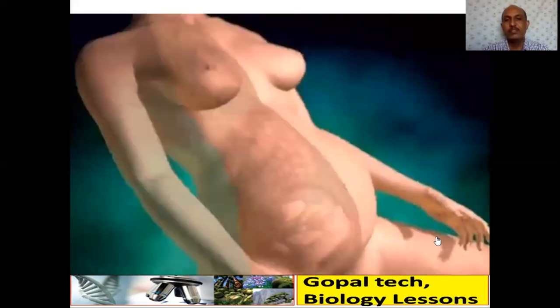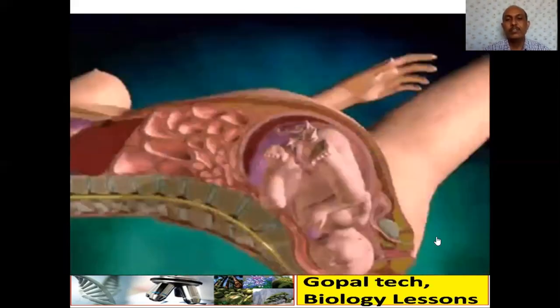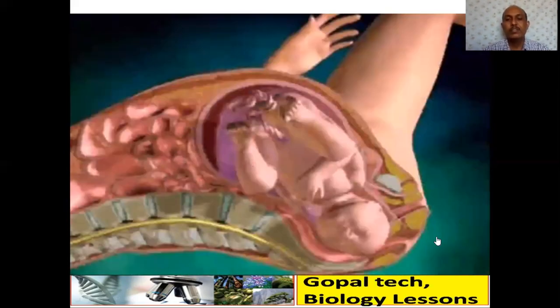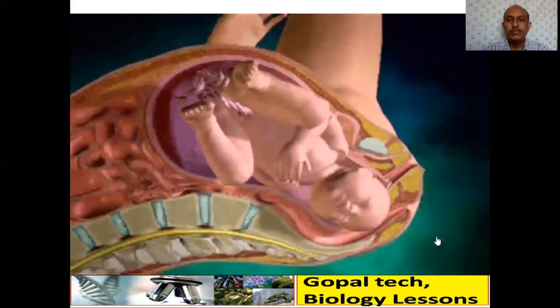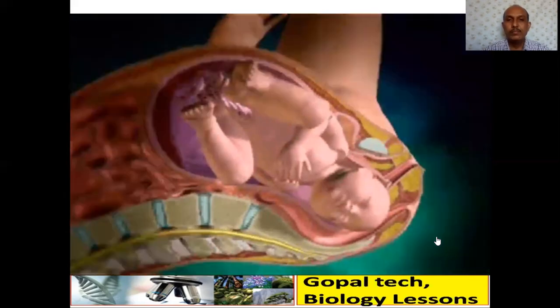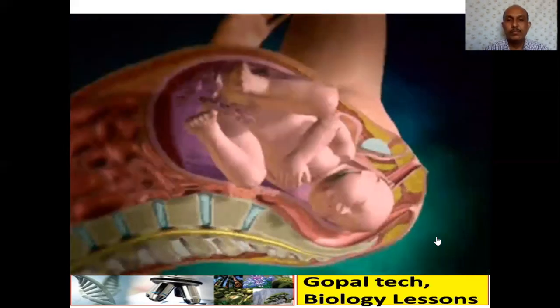The woman's uterus nurtures and protects the developing fetus during gestation. A full-term pregnancy is approximately 40 weeks. When the fetus has matured and birth is imminent, the baby begins to go through a series of movements that help it navigate through the birth canal during labor.